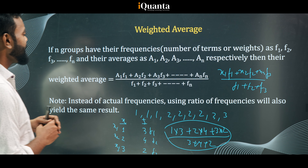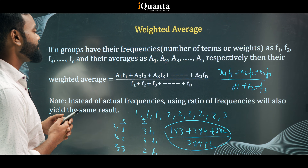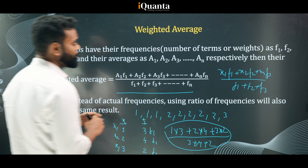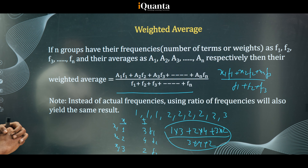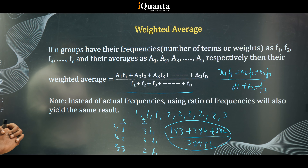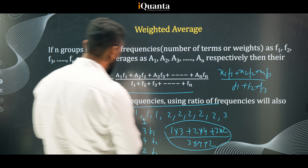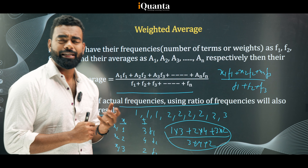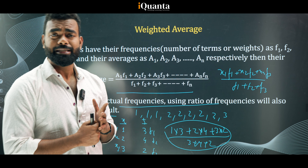Now consider a different case: if n groups have frequencies f1, f2, f3, ..., fn and their averages are a1, a2, a3, ..., an, the weighted average is (a1·f1 + a2·f2 + ... + an·fn) / (f1+f2+...+fn). Importantly, instead of actual frequencies, using the ratio of frequencies will yield the same result. We can use the ratio of weights as well — this is a very important concept.